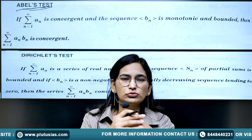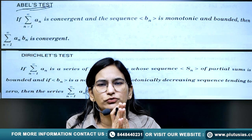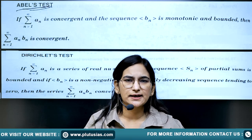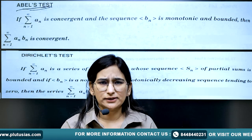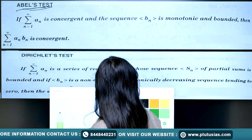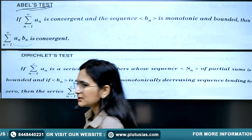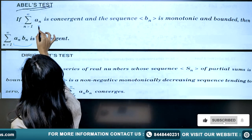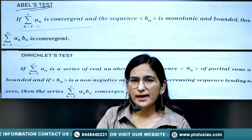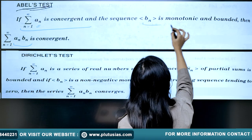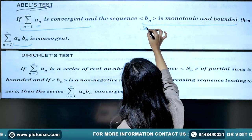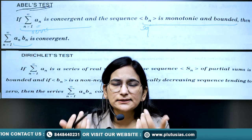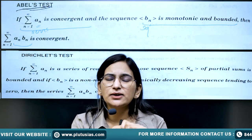Abel's test: whenever it comes to mathematics, you must have an idea that they talk about the product of something — it may be product of series, product of functions, or product of functions and series, etc. Abel says that if you have a series of the kind Σ aₙbₙ — a product of two things — then you can test its convergence by bifurcating it. Show that the series Σ aₙ is convergent, and bₙ should be a monotonic and bounded sequence.